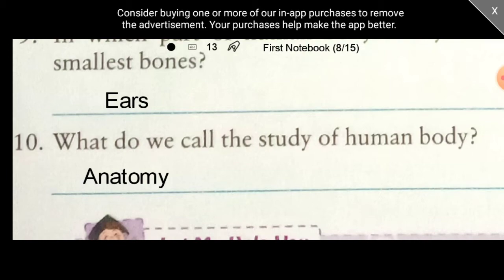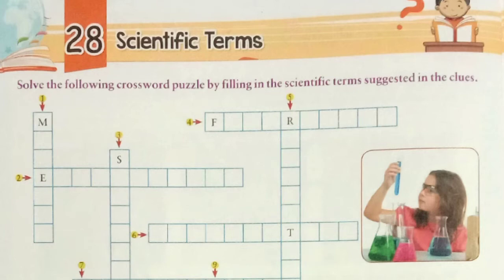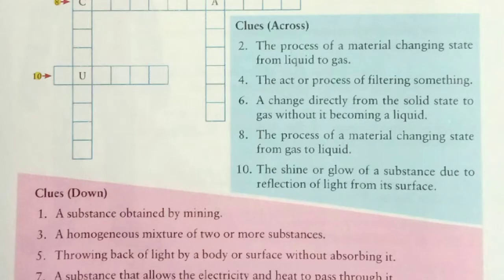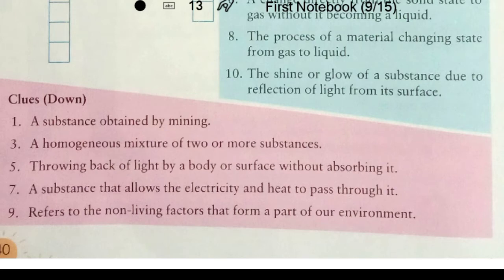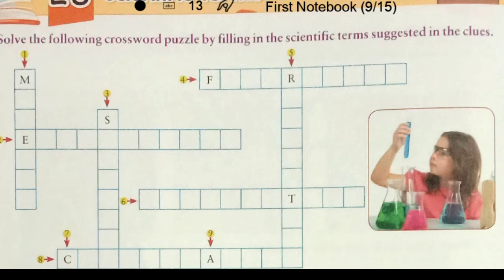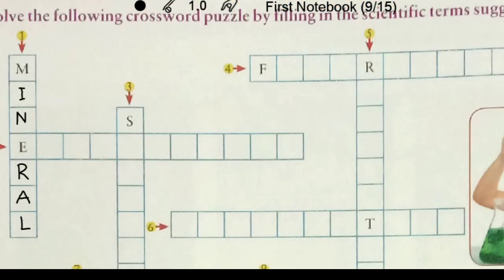Now we will move to our next exercise — Exercise 28: Scientific Terms. Here we have to solve a crossword puzzle by filling in the scientific terms suggested in the clues. We have to read these clues and find out the scientific terms for the following processes or substances. Clue 1: A substance obtained by mining is called — yes, you are right — it is called minerals.